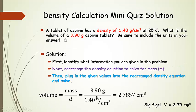And now we're going to plug everything in. So 3.90 grams divided by 1.40 grams per centimeter cubed. So both the grams are going to go away, and we're going to be left with centimeters cubed, or cc's.